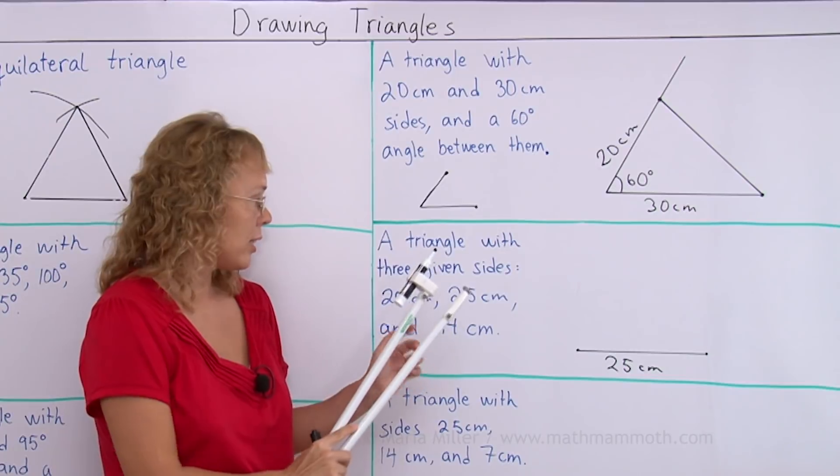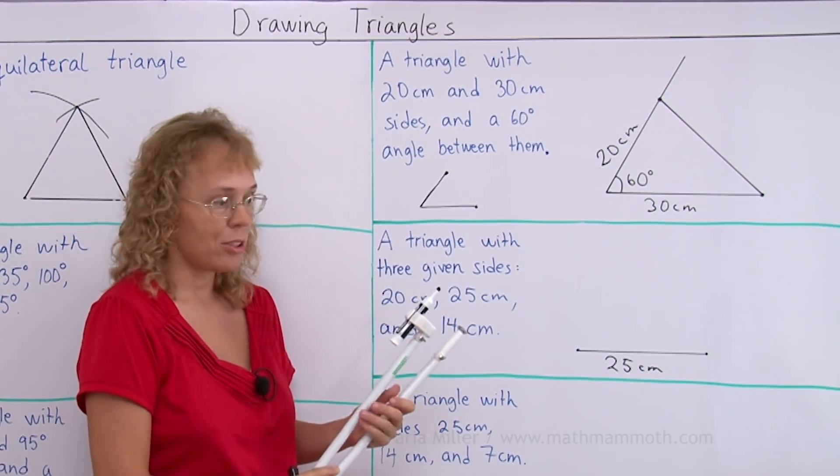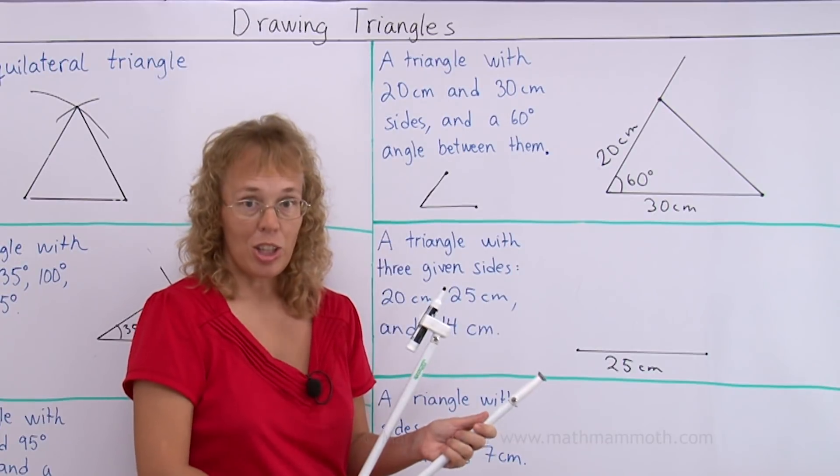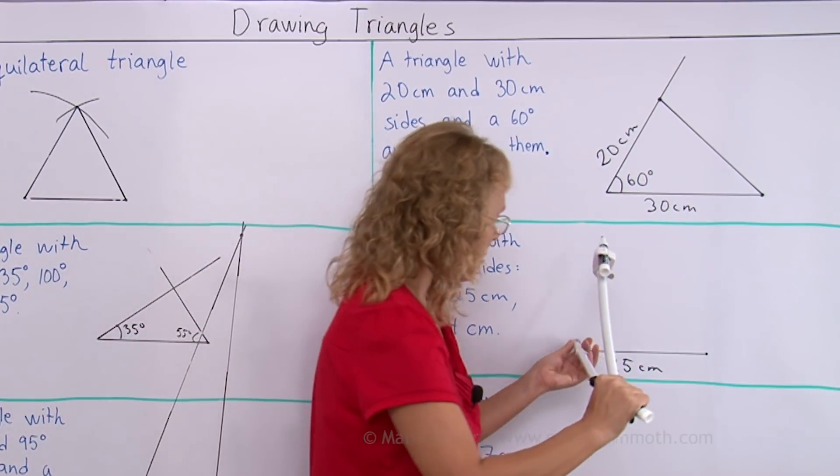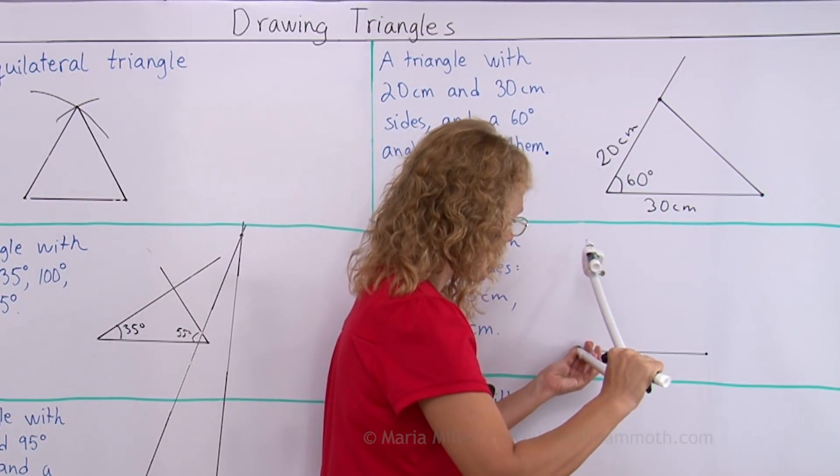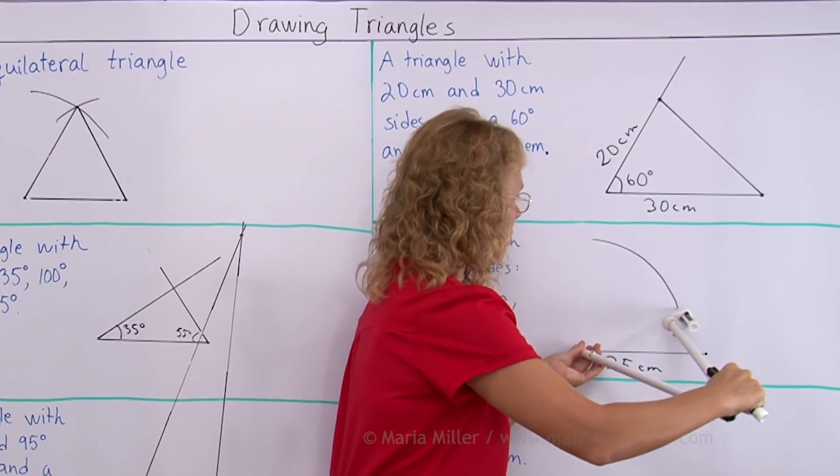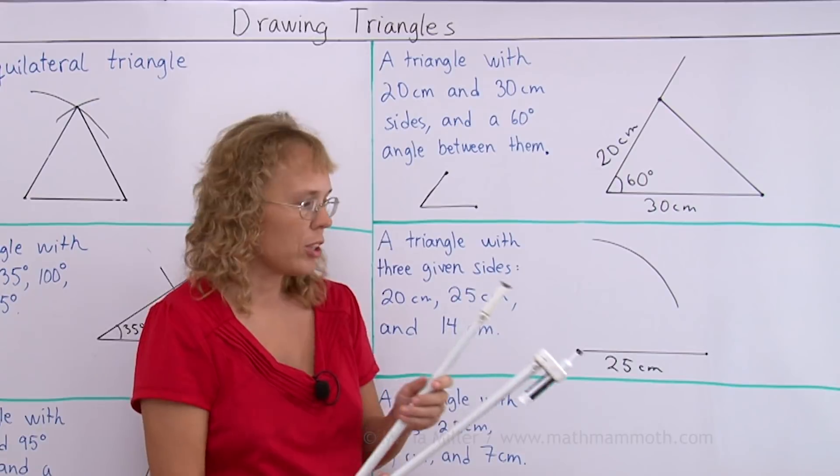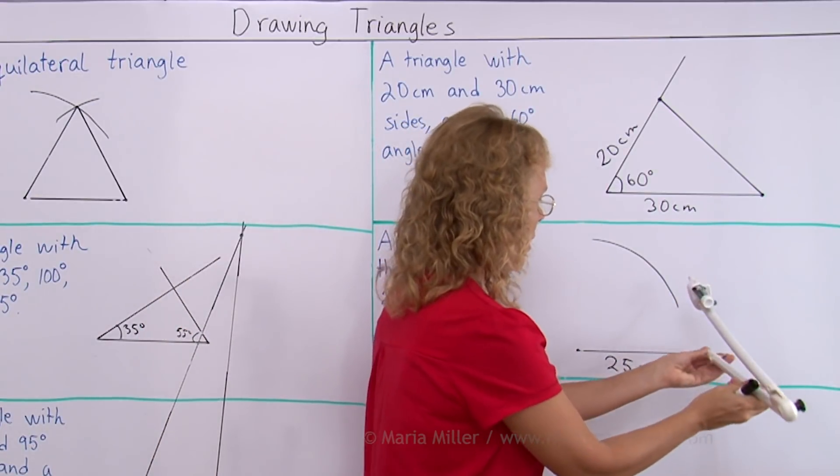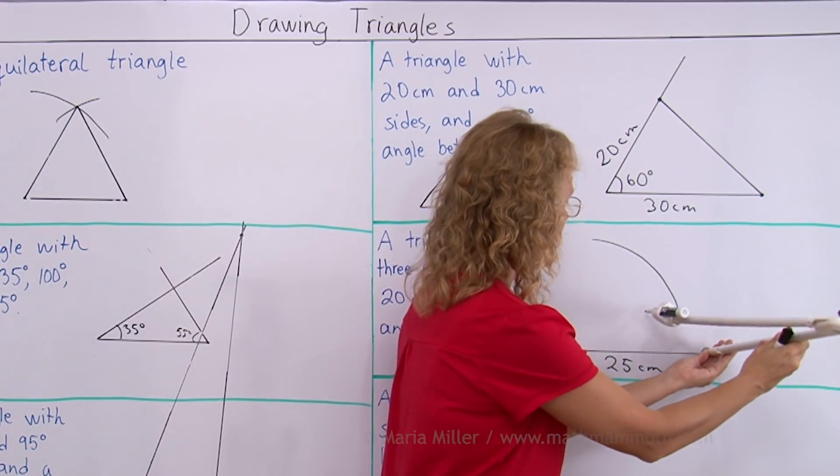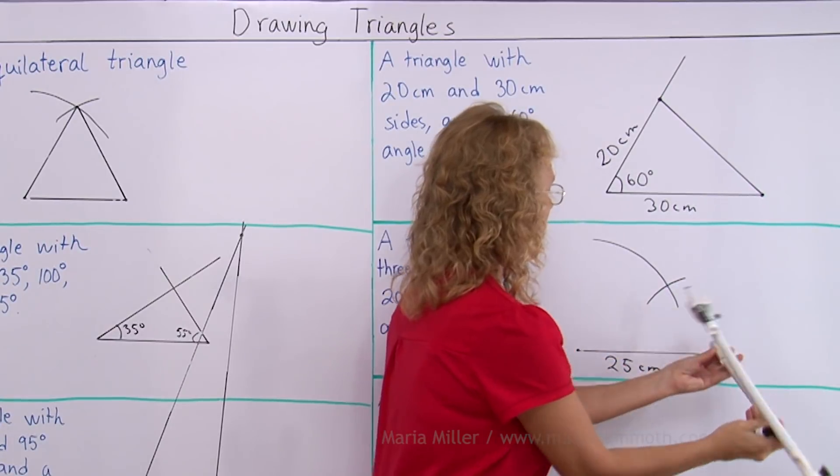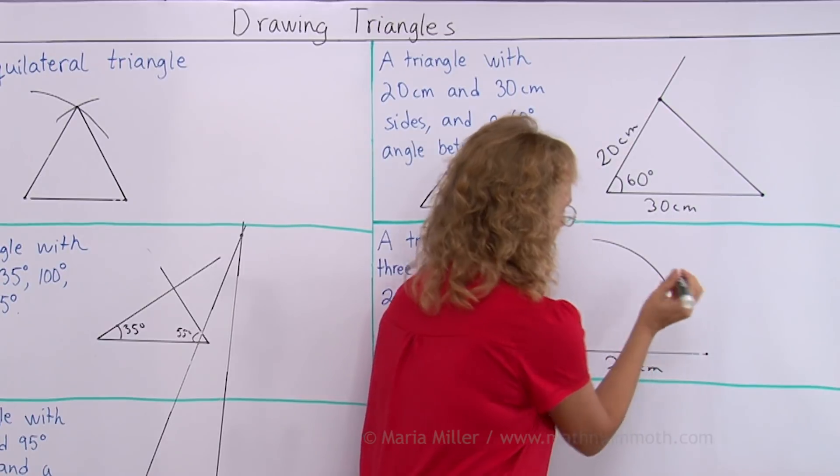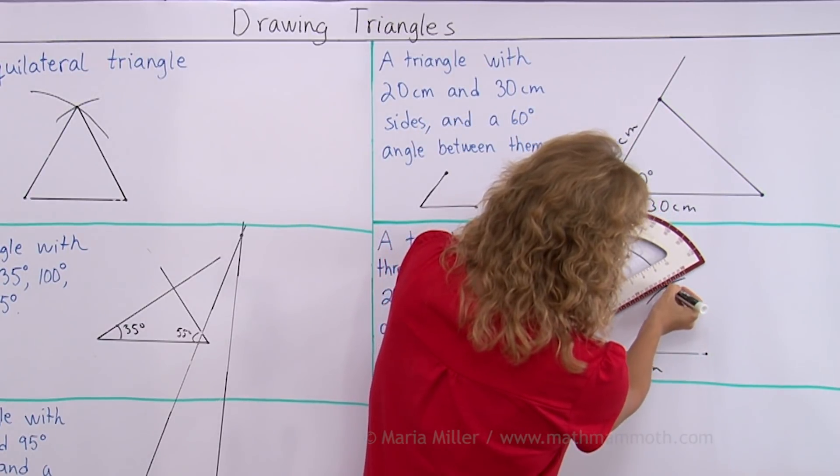So as my compass I need to set it to 20 centimeters first of all. Now the compass is set to 20 centimeters. Put the center here. Draw an arc. And now the compass is set to 14 centimeters. And I use this as my center. And there. There will be the third vertex.